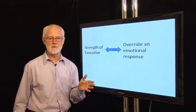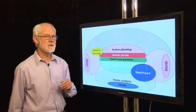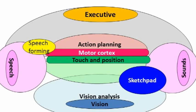So the strength of the executive is connected to the ability to override the emotional response. And this skill is vital for learning, otherwise the pupil will not be able to pay attention in the classroom. So now we can add the executive to the diagram. It's right at the front of the brain, literally just above the eyes.